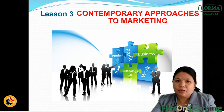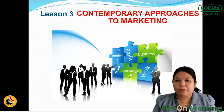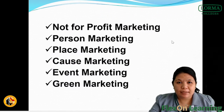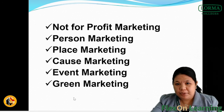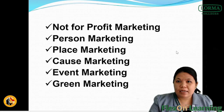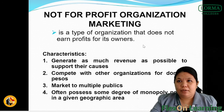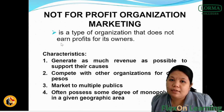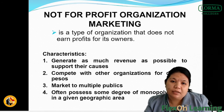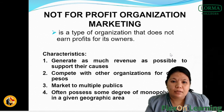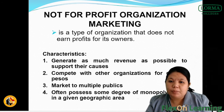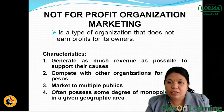Now let's move on with lesson three — the contemporary approaches to marketing. We have not-for-profit marketing, person marketing, place marketing, cause marketing, event marketing, and green marketing. The not-for-profit organization marketing is a type of organization that does not earn profits for its owners. Its characteristics include generating as much revenue as possible to support their causes, competing with other organizations for donors, marketing to multiple publics, and often possessing some degree of monopoly power in a given geographic area.